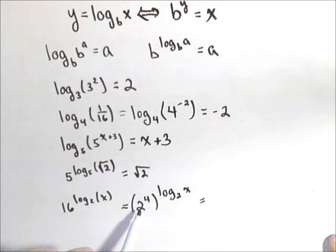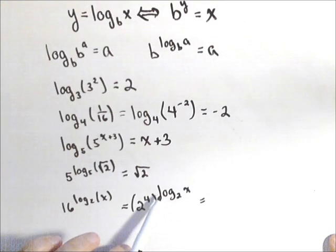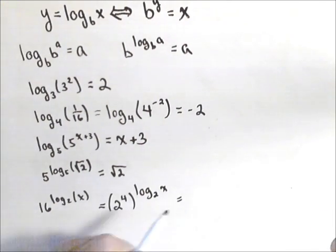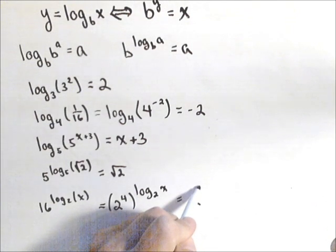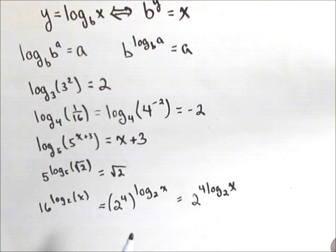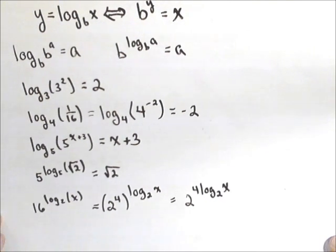All right, we can't quite use the property yet, but what happens when we have an exponent raised to an exponent, they multiply. So, this can be rewritten as two raised to the four log base two of x. We still can't quite use the property yet, but we're getting close.